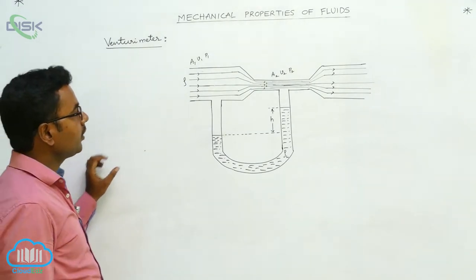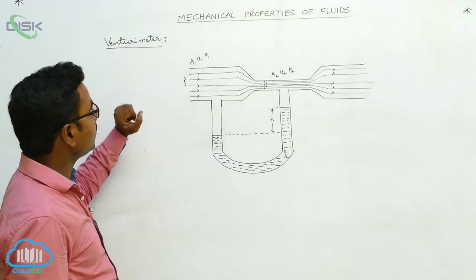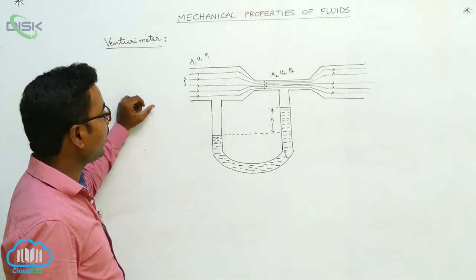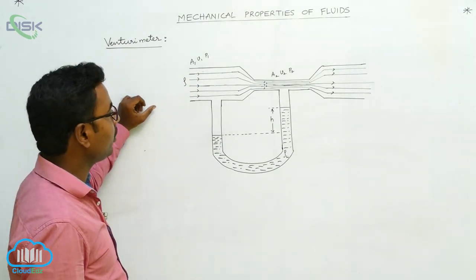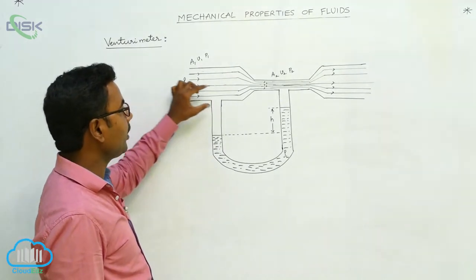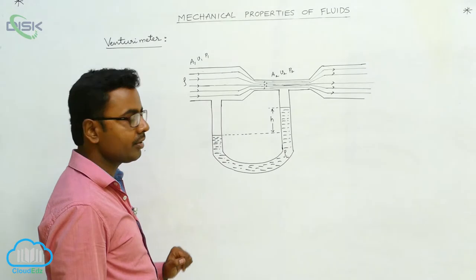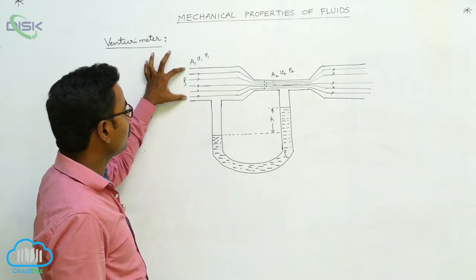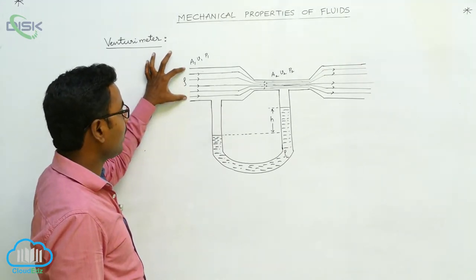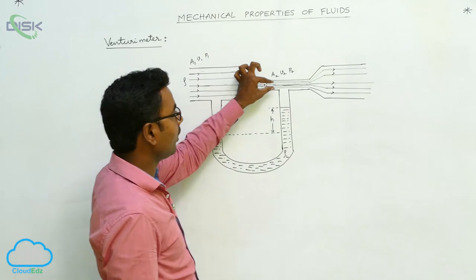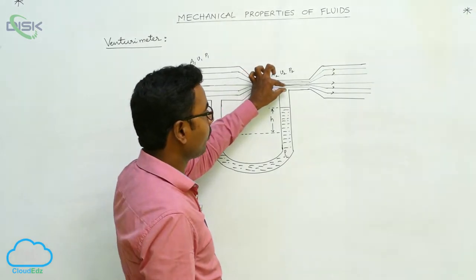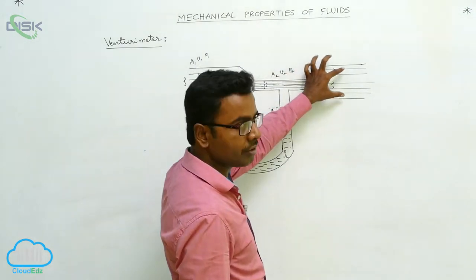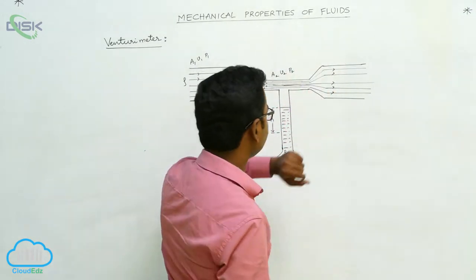The construction of the venturimeter is like this. It contains a tube of varying area of cross section — a tube of larger area of cross section, then a tube of narrow area of cross section, and again a tube of larger area of cross section.